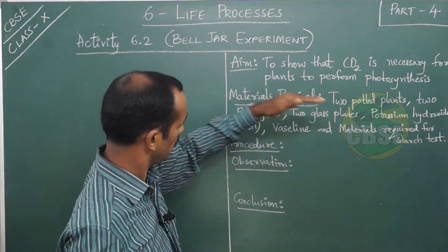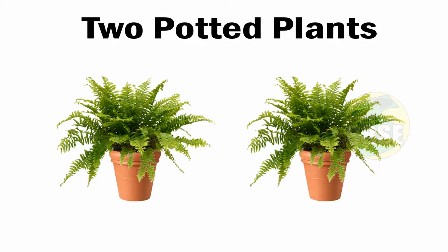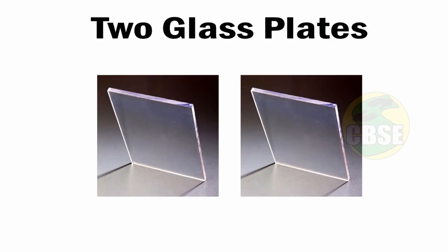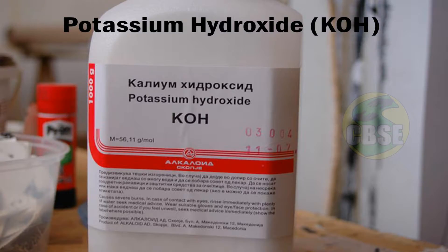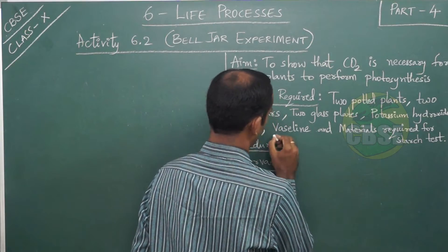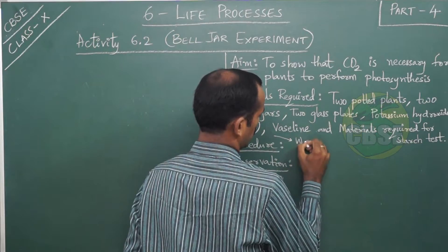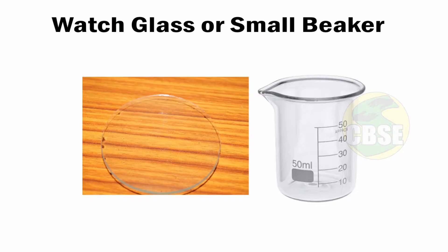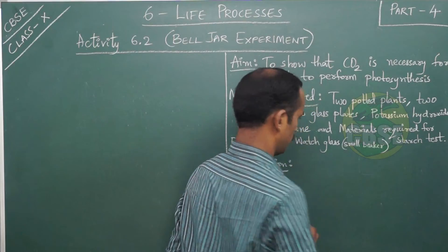Along with the starch test materials, the materials required for this activity are two potted plants of the same size, two bell jars to cover those potted plants, two glass plates, potassium hydroxide (KOH) either in crystal form or solution form, and a small watch glass or small beaker.